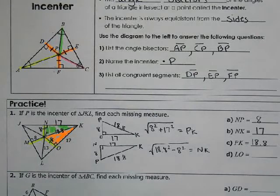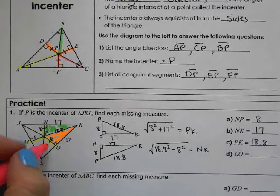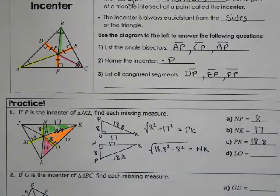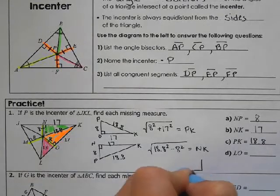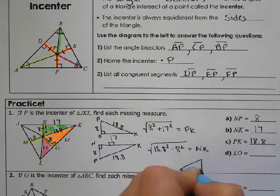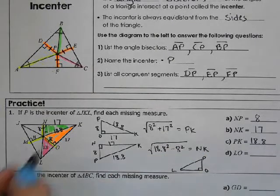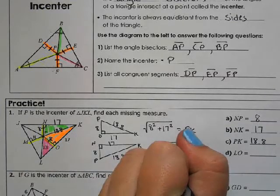And then LO, we have another right triangle. Right there. So we have LPO. PO is 8. LP is 13. So we need LO. So again, we have the hypotenuse and a leg.